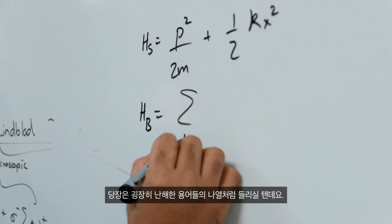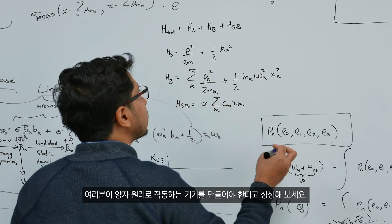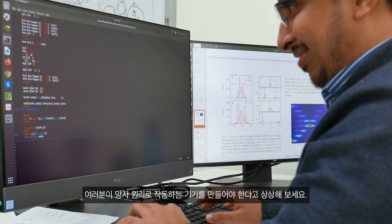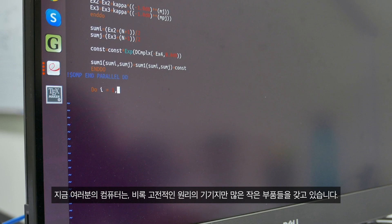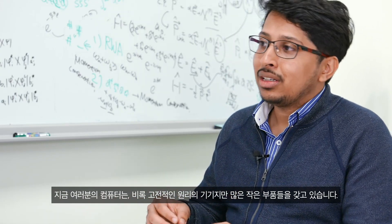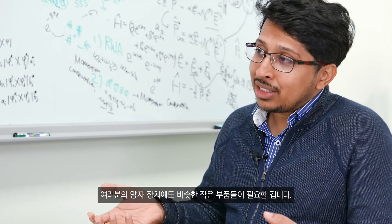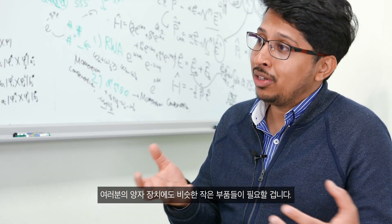Now, I know it might sound like a lot of heavy words at this stage. Imagine you have to build a device which is working on quantum principles. Your computer today, although it's a classical device, it has a lot of small components like a transistor, resistors and so on and so forth. You would require, for a quantum device, similar small components.